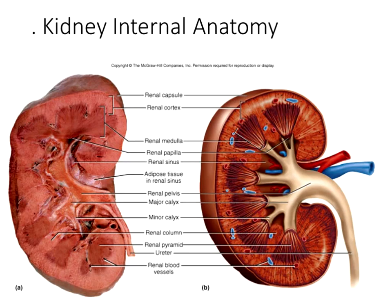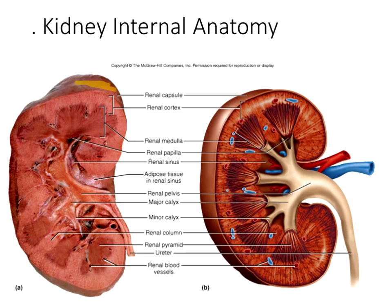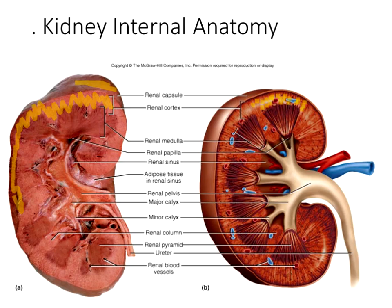The minor calyces connect to major calyces and form a pelvis — a little sac connecting to the ureters. Looking at the kidney cross-section: the outside is the capsule with a fat-rich and collagen-rich area; the cortex is lighter colored with nephron capsules and most proximal and distal convoluted tubules; the medulla contains the columns and pyramids — pyramids are triangle-shaped with a broad base. The pelvis with the calyces sits in the center.